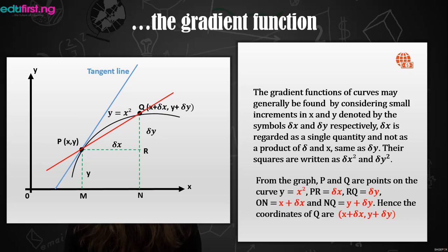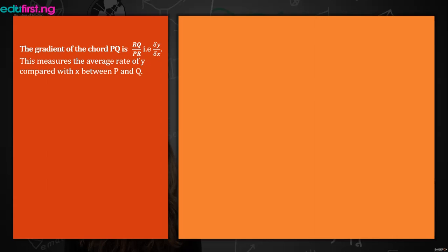From this curve you can see point P with coordinates (x, y). When you move from P to Q there is a shift on the x-axis and also a shift on the y-axis. That little shift is what we call change, or delta — so for the x-axis we have delta x and for the y-axis we have delta y. From the graph, P and Q are points on the curve y equals x squared. PR is delta x, RQ is delta y. ON is x plus delta x, and NQ is y plus delta y, giving the coordinates of Q.